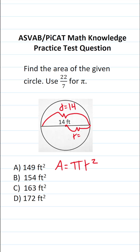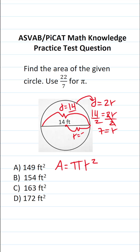There is a predefined relationship between the diameter and radius of a circle — the diameter is always twice as long as the radius, that is d equals 2r. We know d is 14, so plugging that in: 14 equals 2r. Dividing both sides by 2 gives r equals 14 over 2, which is 7.